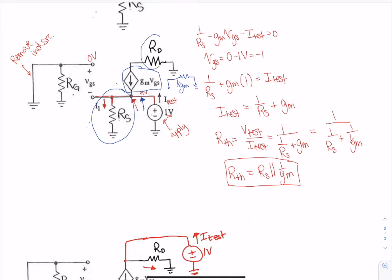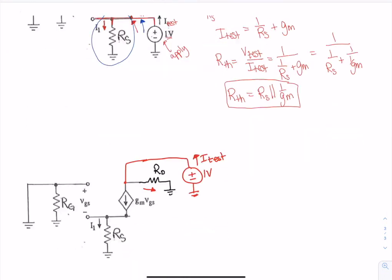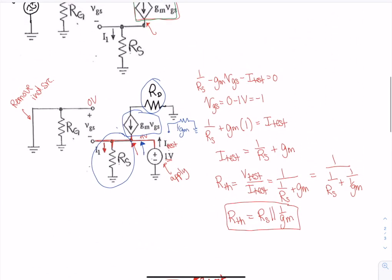So that also tells me that it doesn't matter that there's any resistance or anything on that side of the dependent source. I'm going to be able to ignore that and basically put an equivalence of one over gm in whenever I'm at the bottom looking into that dependent source.